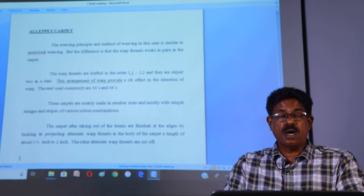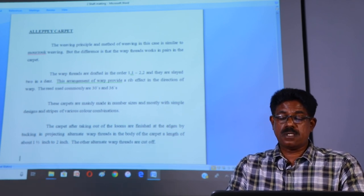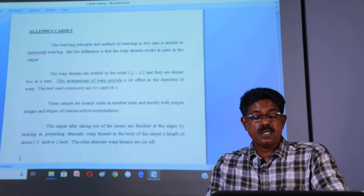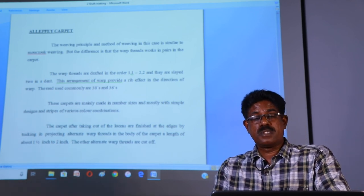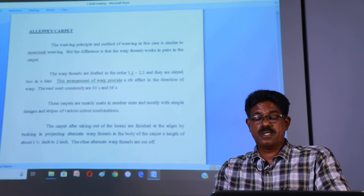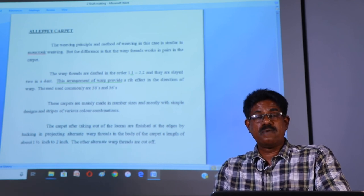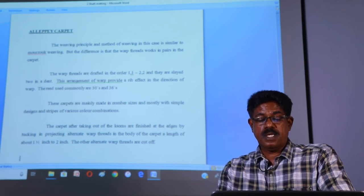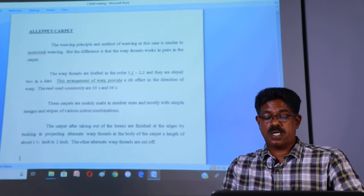The carpet, after taking out of the looms, are finished at the edges by tucking in projecting alternate warp threads in the body of the carpet, a length of about 1.5 inch to 2 inch. The other alternate warp threads are cut off.